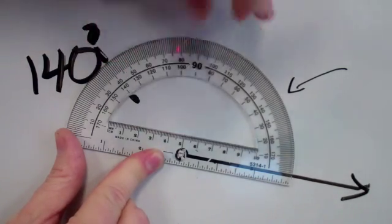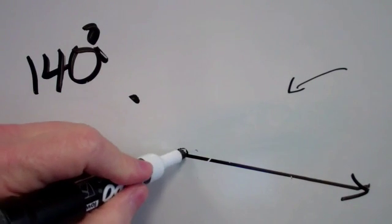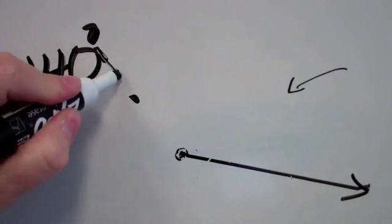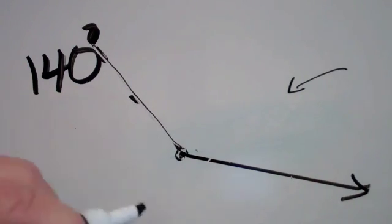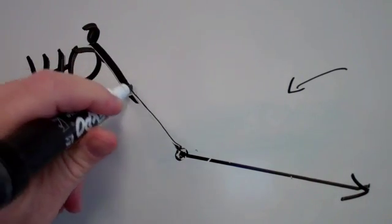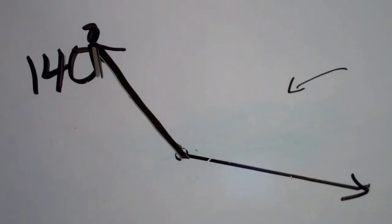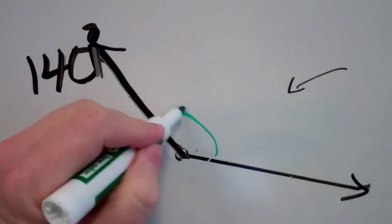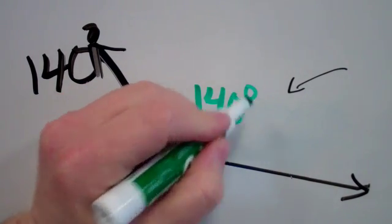I'll put a little dot at 140. Now here's my vertex and I can see my line—the other ray is going to be right here. That is my 140-degree angle, and the arc represents this piece right here, 140 degrees.